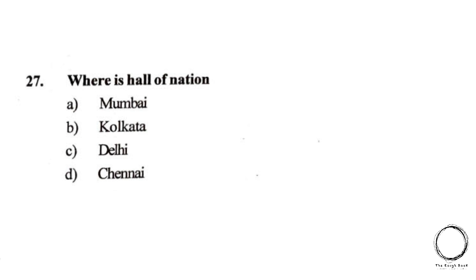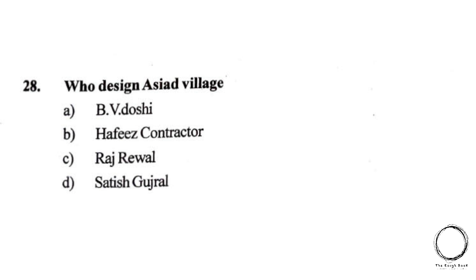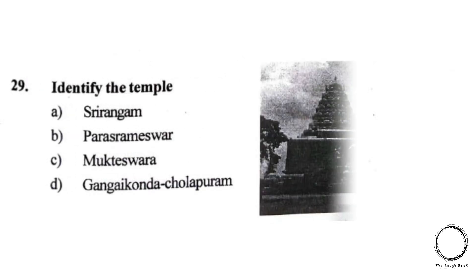Moving on: where is the Hall of Nations? Options: A) Mumbai, B) Kolkata, C) Delhi, D) Chennai. The right answer is C, Delhi. Moving on: who designed Asia Village? Options: A) B.V. Doshi, B) Hafiz Contractor, C) Raj Rewal, D) Satish Gujral. The right answer is C, Raj Rewal.